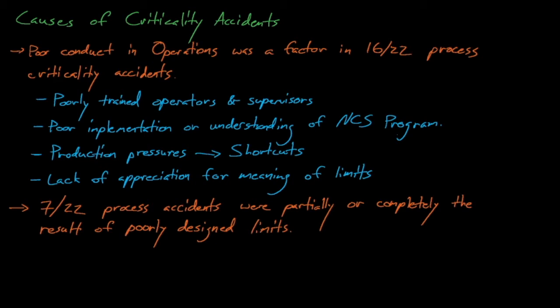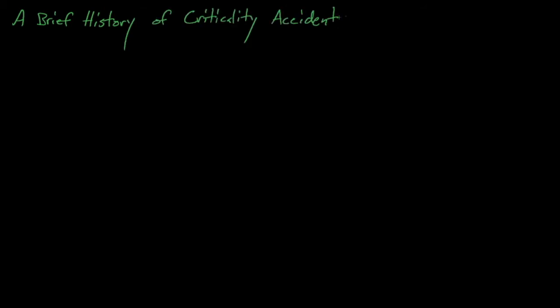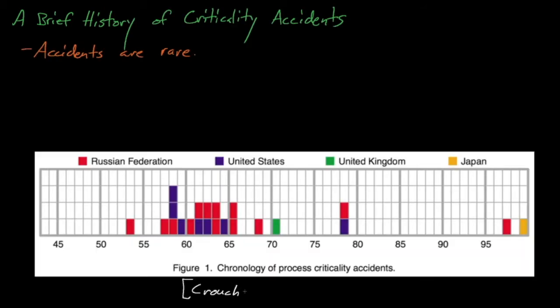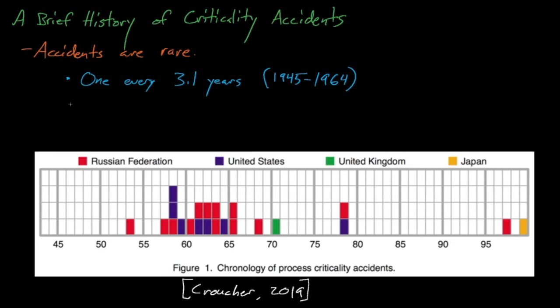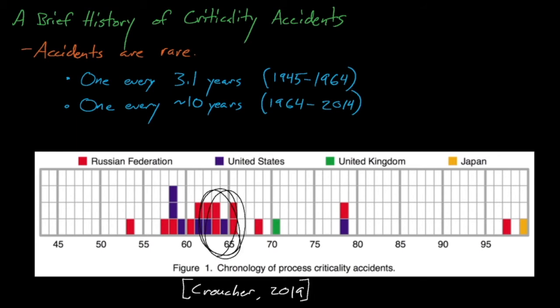We'll discuss limits and controls in much more detail in the following lecture. If we look at a historical timeline of criticality accidents, we notice several things. First, that criticality accidents are actually pretty rare — on average, between 1945 and 2014, a criticality accident occurred once every 3.1 years. However, this already low accident rate was made even lower after 1964, dropping to an average of one accident every approximately 10 years. So what happened in 1964? The United States of America Standard Institute released the first set of consensus-based nuclear criticality safety standards.